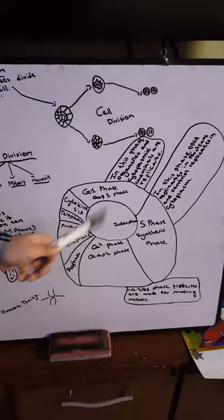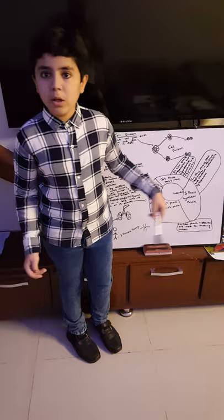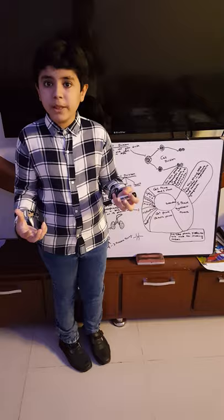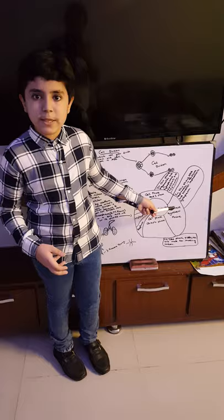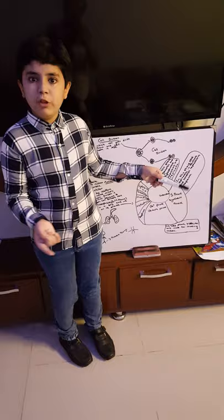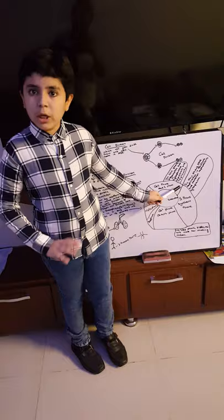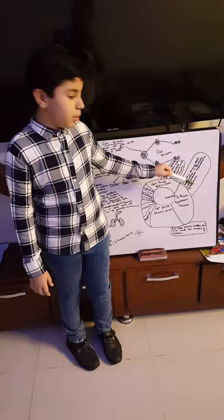In G1 phase, all organelles — meaning the parts inside the cell — replicate, and cytoplasmic chemicals are replicated and formed. In S phase, the synthesis phase, DNA replicates in the nucleus and the centriole replicates in the cytoplasm. In this phase, all organelles are made, DNA is formed in the nucleus, and centrioles are formed in the cytoplasm.